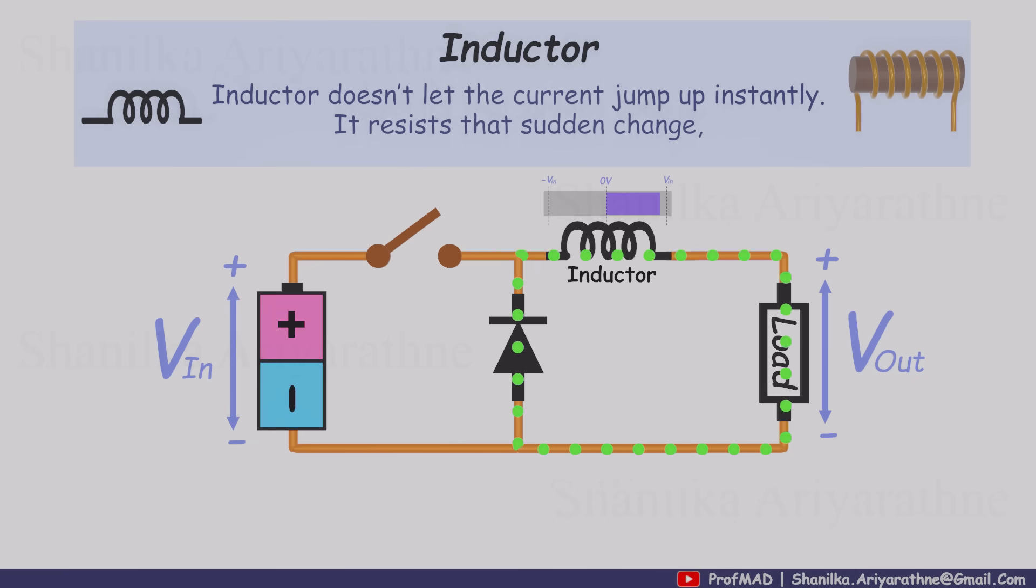That voltage forward biases the diode, and the current now loops through the diode and the load. So even though the switch is open, the load still receives current.